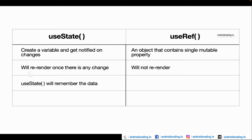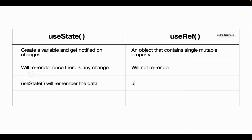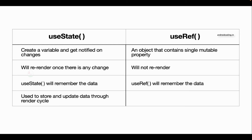The third point is that use state will remember the data and use ref will also remember the data — the data will be the same in both cases. The data will be incremented, decremented, and whatever changes you make will be retained. The only difference is that it will not get re-rendered in terms of use ref, but it will get re-rendered in terms of use state. Both have their own importance in real-world programming.